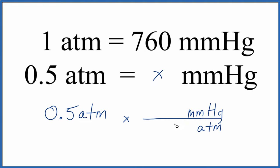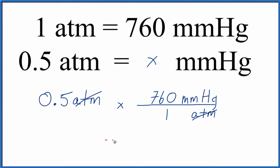So 1 atmosphere is 760 millimeters of mercury. Now we multiply and then divide. Atmospheres cancel out. We're left with 380 millimeters of mercury. Same as we got before.